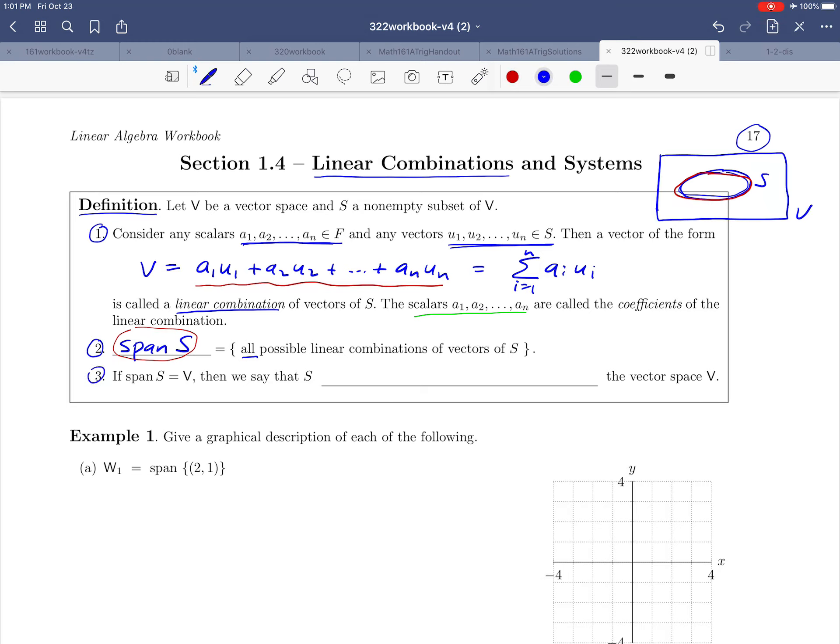And then finally, one more part to this definition. In some cases, you might find that this bag, S, that you started out with is big enough so that when you take the span of S, all the possible linear combinations of vectors in S, you get the entire vector space. And if that happens, if the span of S is everything in our vector space, we say that S spans or generates the vector space.